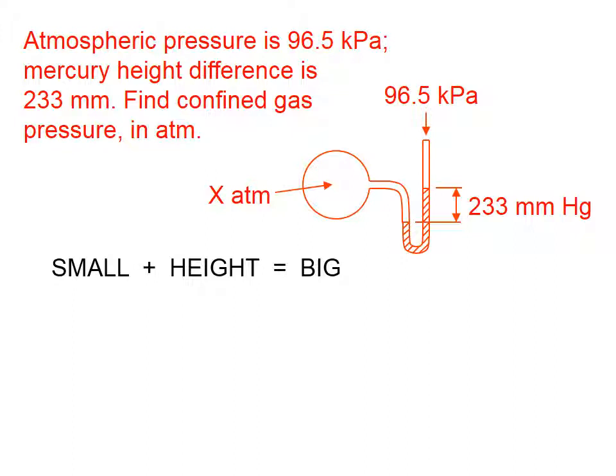Who's the big pressure and who's the small pressure between the confined gas and the atmosphere? Look at the shape of this mercury. You can see that the confined gas is pushing down harder than the atmosphere is. Therefore, the confined gas is the big pressure, and the atmosphere in this case is the small pressure.